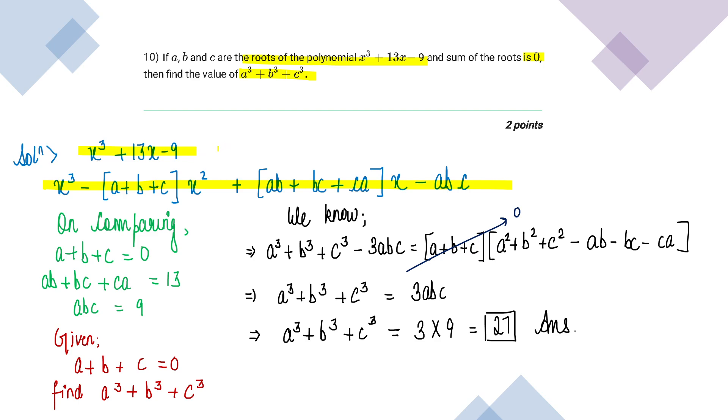Now let's compare this first equation which is already given into the question and this knowledge which we know from our 9th class. So when we will compare, we know that a+b+c will be 0. That is, sum of roots will be 0. Product of roots will be 9. And similarly, multiplication of two roots' summation will be 13. This I got on comparing. And same thing was given in the question as well.